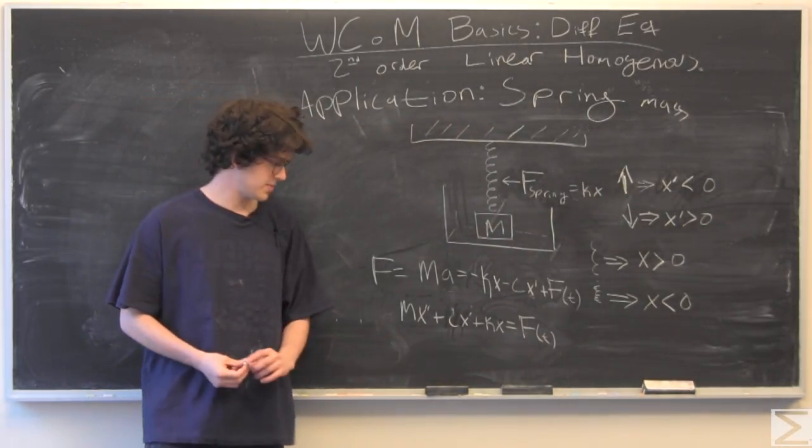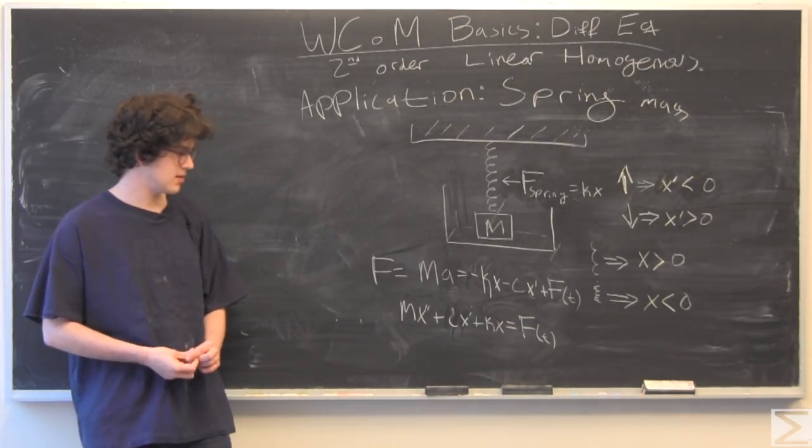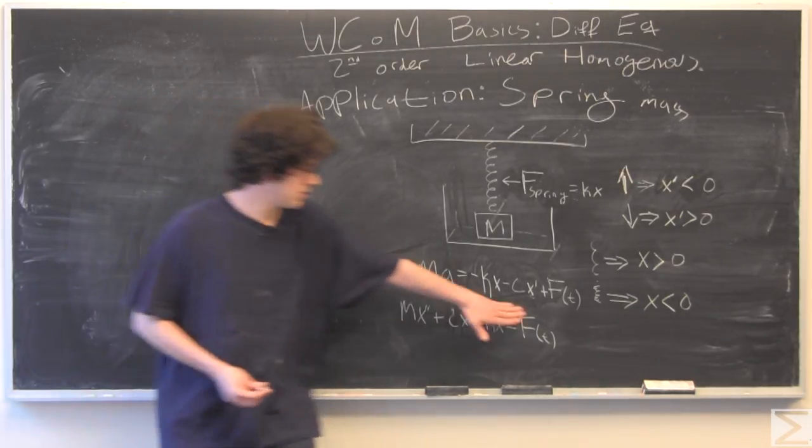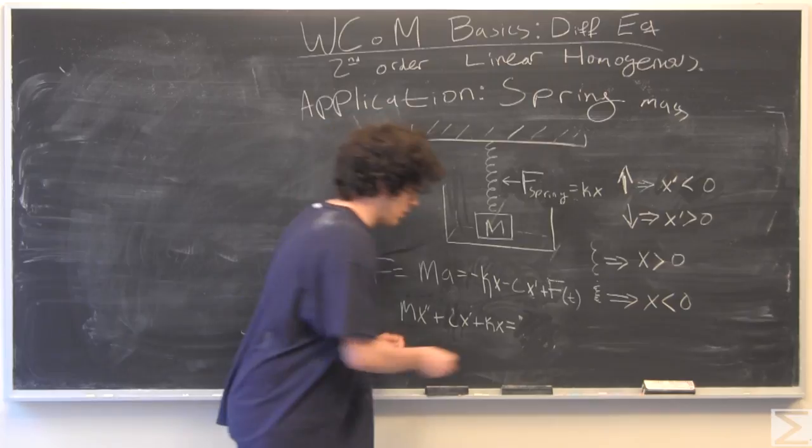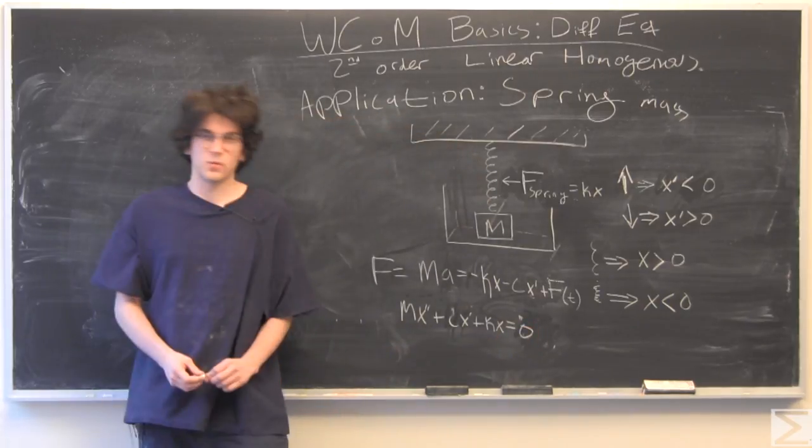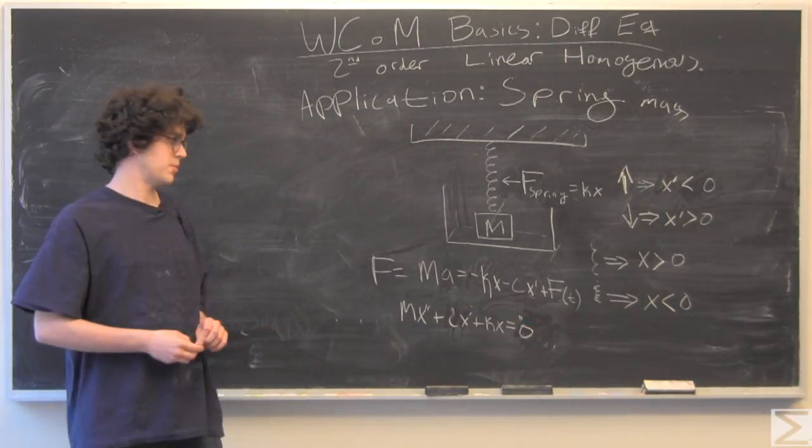So mx double prime plus cx prime plus kx equals f of t. For the time being, we are not going to have any external forces on our object.